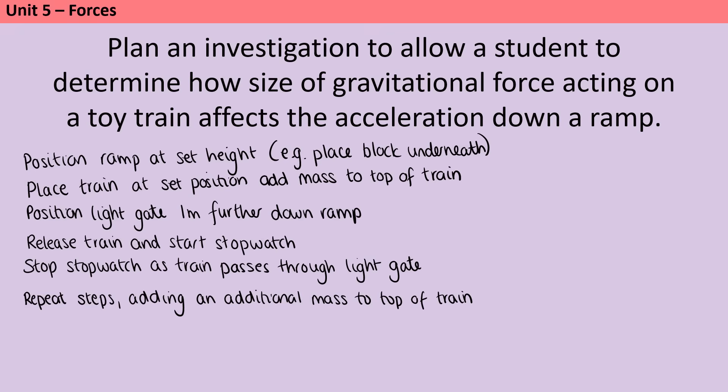We then need to repeat all of these steps adding additional masses to the top of the train, or to the pulley system if that's what we're using. And then as we said, we would use the time from the light gate and the length of the train to determine the speed. And we could put these together to work out the acceleration.